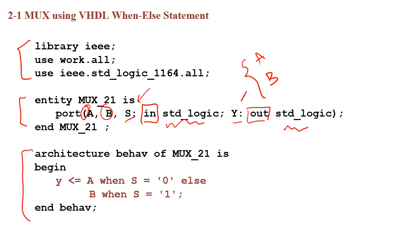In the architecture part — the last part of a VHDL code file — we define the relationship between the ports, assigning every output a value. We write: architecture behave of mux_two_one, then begin. We assign y using the assignment operator: y <= a when s = '0' else b when s = '1'. So if s is 0 then y equals a; if s is 1 then y equals b. This completes the 2-to-1 mux using the when/else statement.